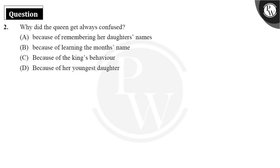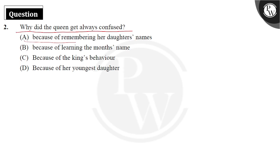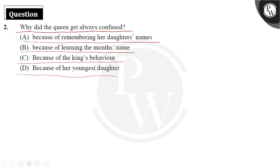Let's discuss question second: why did the queen always get confused? Let's find out with the options — because of remembering her daughter's names, because of learning the months' names, because of the king's behavior, or because of her youngest daughter.